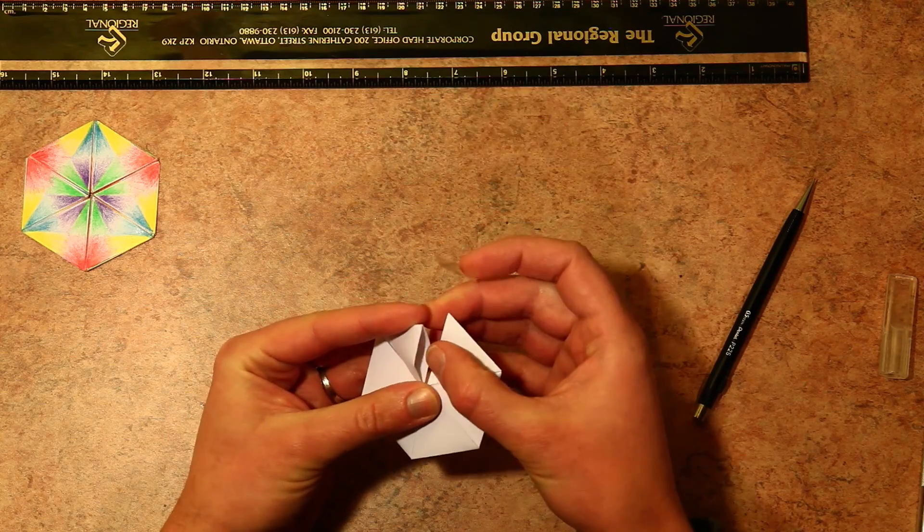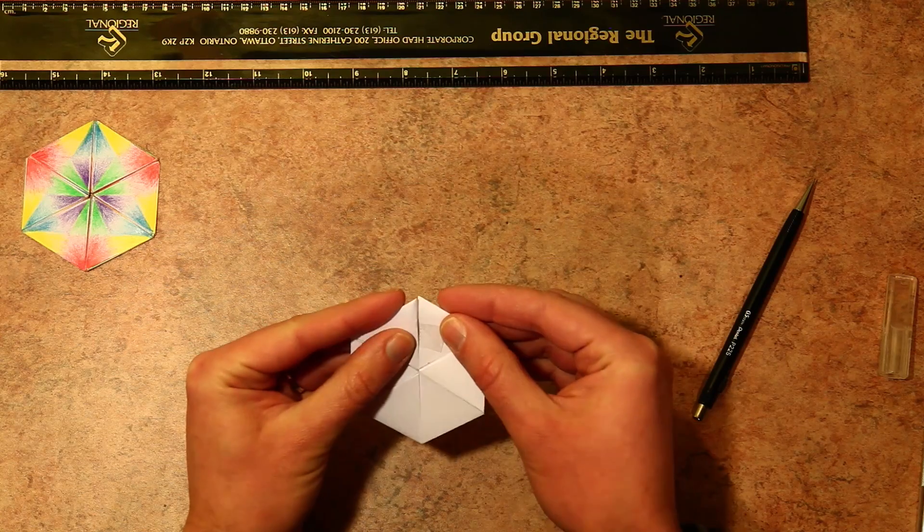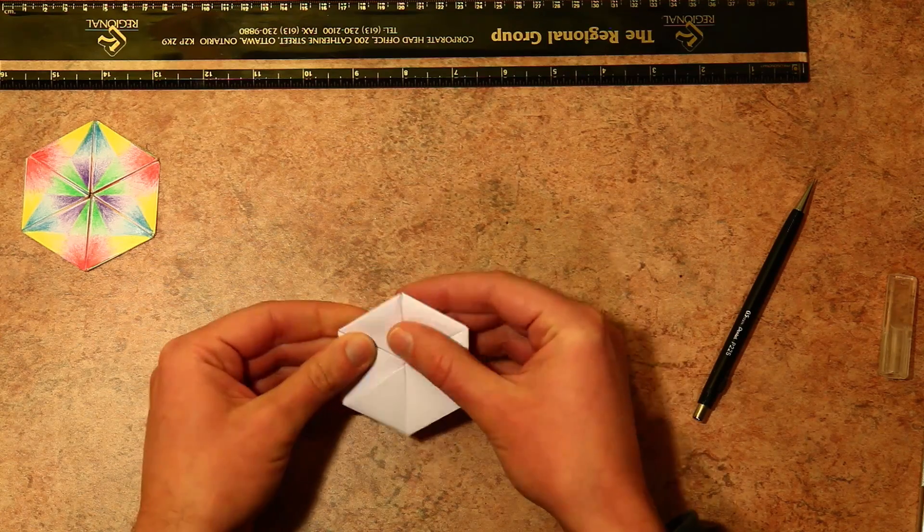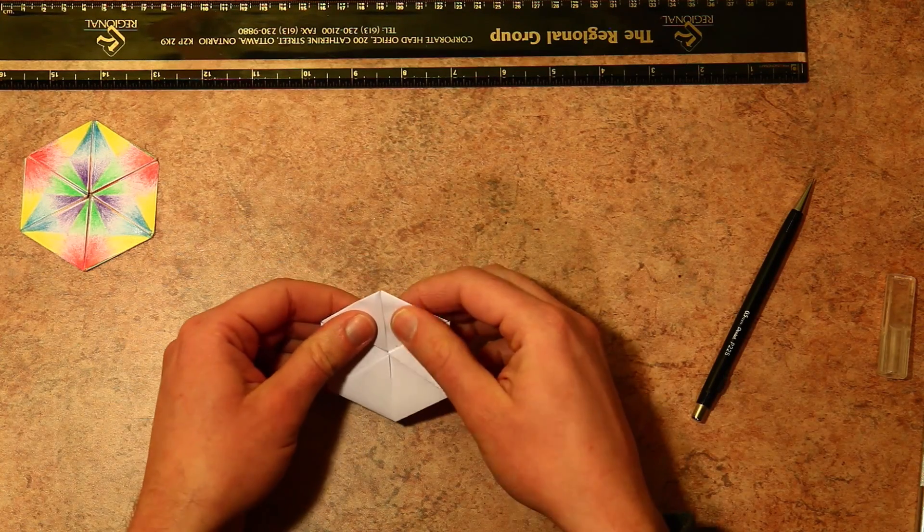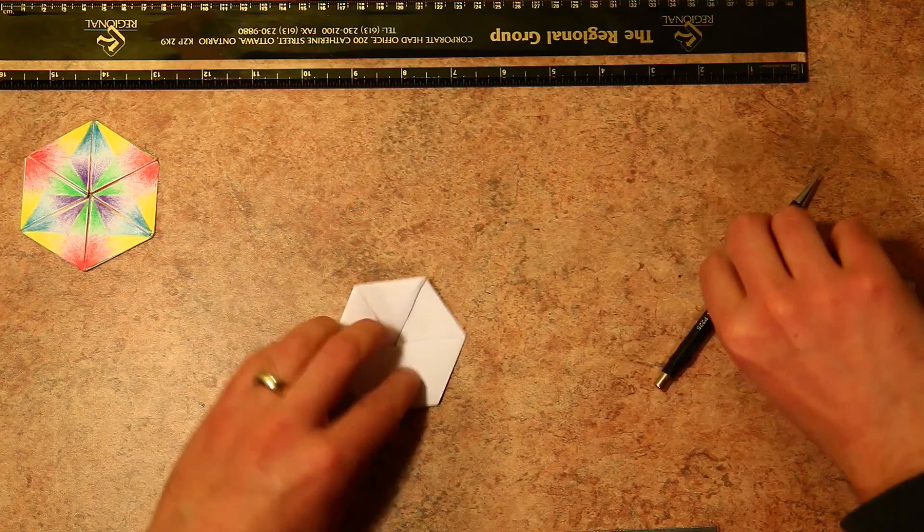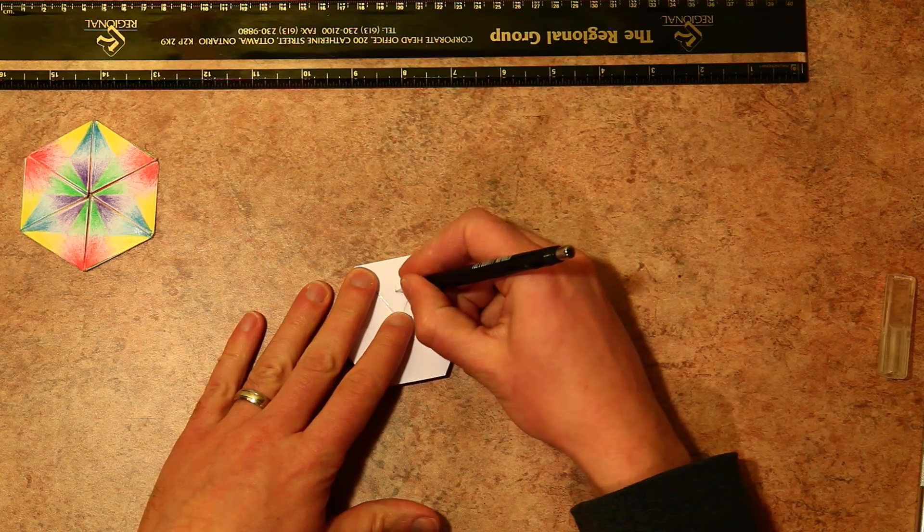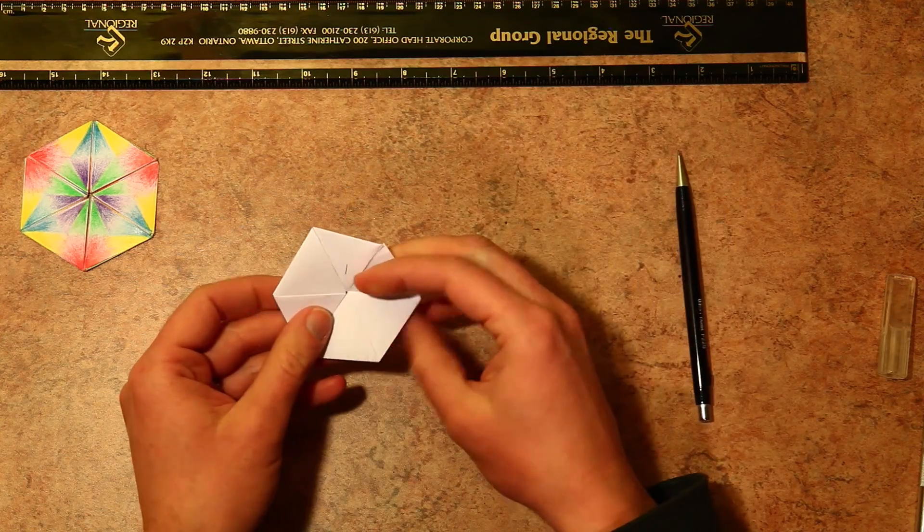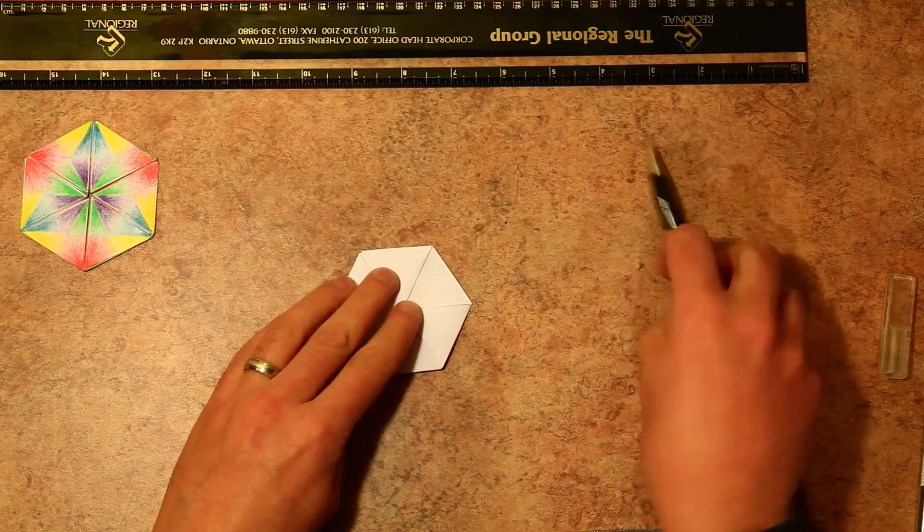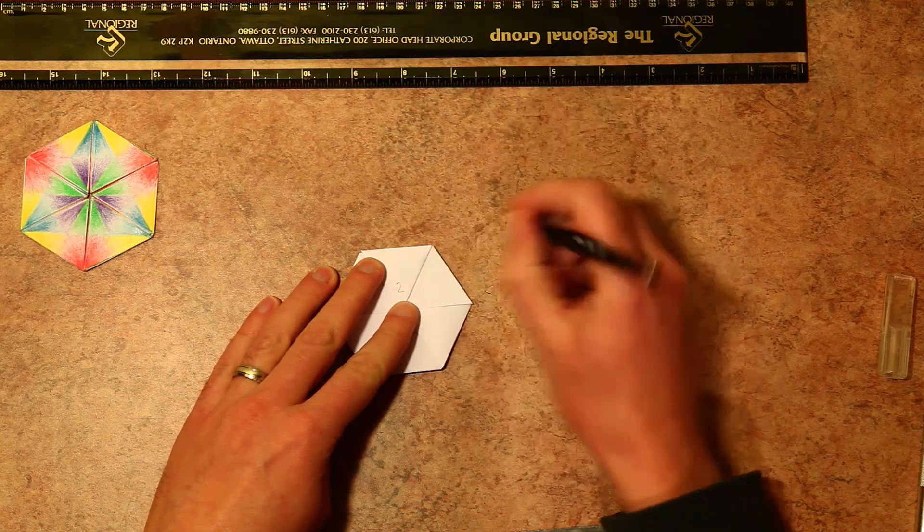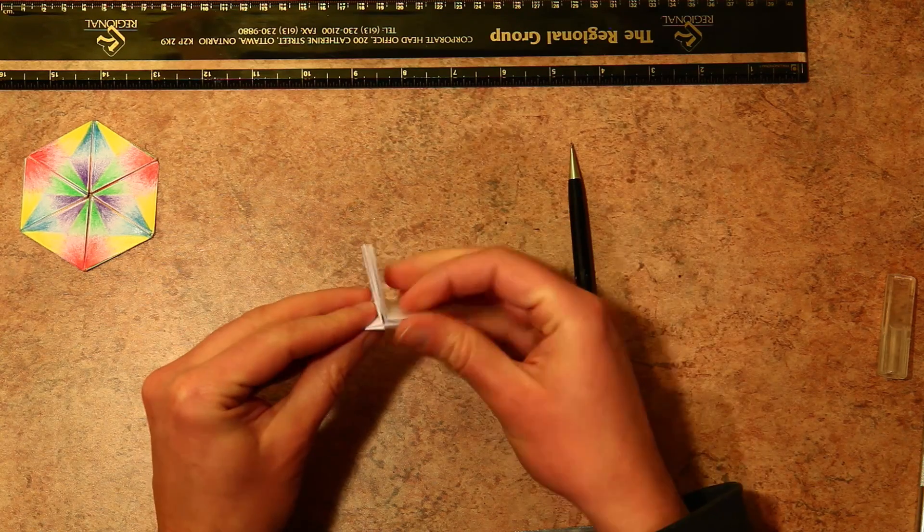And there's your hexaflexagon with six sides. Once you have your hexahexaflexagon folded, it doesn't take too much effort to go through it and find all six sides and label them.